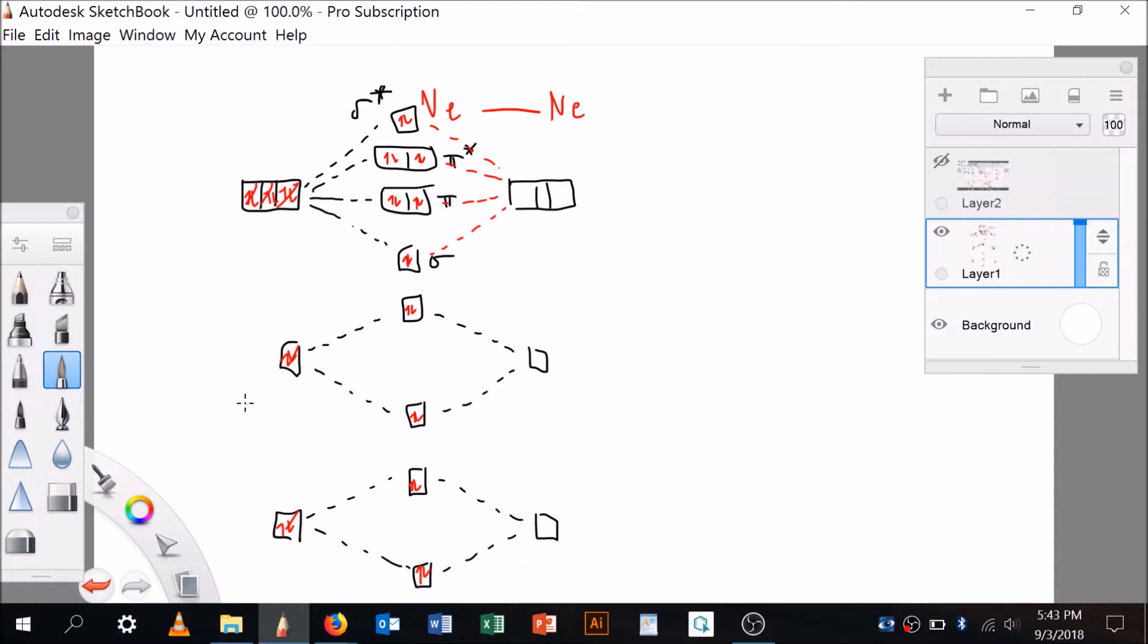Let me label everything in green. This is a 1s orbital and this is a 1s orbital. This is a sigma 1s bonding orbital, this is a sigma 1s antibonding orbital. This is a 2s orbital, this is a 2s orbital. This is a sigma 2s orbital and this is a sigma 2s antibonding orbital. This is sigma 2p and this is sigma 2p star.